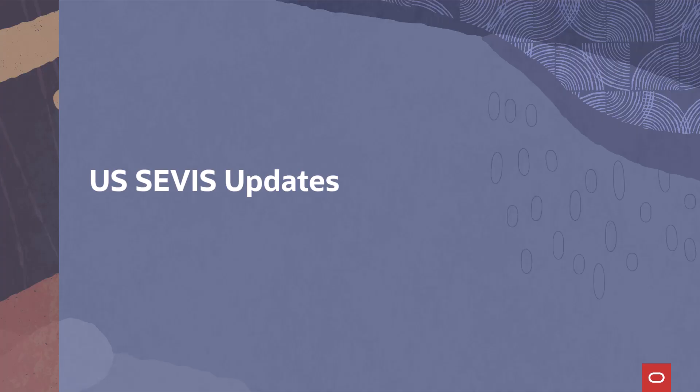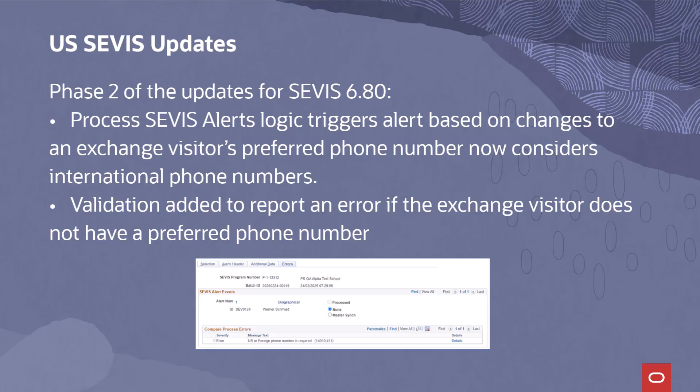For Phase 2 of the updates to support the SEVIS 6.80 batch release, we have made some additional updates. For biographical alerts generated by the process SEVIS alerts, the logic to trigger the alert based on changes to an Exchange Visitor's preferred phone number has been updated to consider international phone numbers. Validation is added to the process to report an error if the Exchange Visitor does not have a preferred phone number.